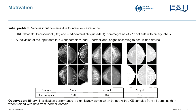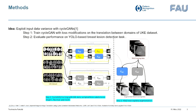We observed that the initial binary classification is significantly worsened when we train a classifier with UKE samples from all domains versus when we train it using data from only the normal domain. This behavior is attributed to the lower amount of samples in both dark and bright domains. This observation led us to the idea of first training a CycleGAN with modifications in the loss function on the translation between UKE domains, and secondly extracting CycleGAN generators for the augmentation of YOLO training data in another step.